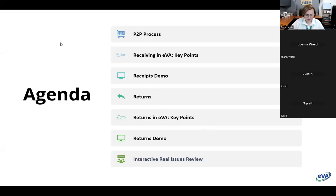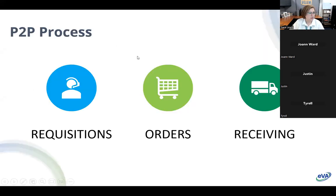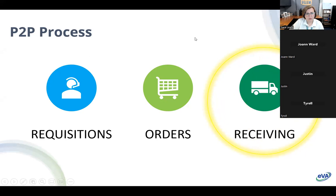So this is the agenda. Let's go ahead and get started with where we are in the P2P process. We went over requisitions last week, orders earlier this week, and finally we are going over the final part in the P2P process, which is receiving. Returns are a form of receipts, which is why they kind of bunch it all together under the receiving umbrella. So we will talk about both of those today.